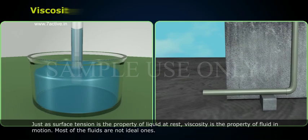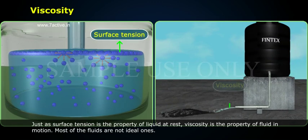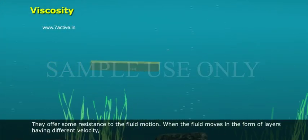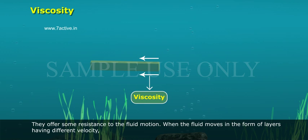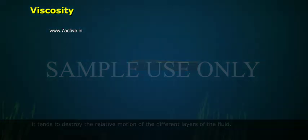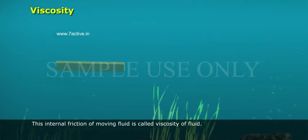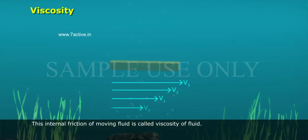Viscosity. Just as surface tension is a property of liquid at rest, viscosity is a property of fluid in motion. Most of the fluids are not ideal ones — they offer some resistance to fluid motion. When the fluid moves in the form of layers having different velocities, it tends to destroy the relative motion of different layers. This resistance is an internal friction of fluid, similar to friction when a solid moves on the surface of another solid. This internal friction of moving fluid is called viscosity.